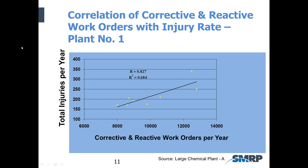Here's more data with total injuries per year on the vertical axis — including first aids — and corrective and reactive work orders per year on the horizontal axis, over an eight-year period. The pattern is consistent: the more reactive and corrective work you do, the greater the risk of injury. And the more corrective and reactive work you do, the lower your OEE and the higher your costs.